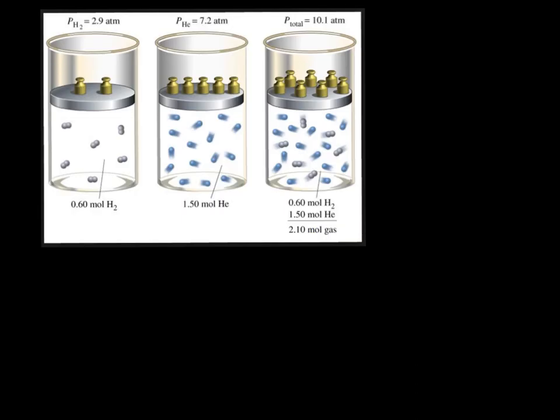Again, just another example here. If I have 0.6 moles of hydrogen and 1.5 moles of helium, it says the total moles is 2.1. If I took 10.1 times 0.6 moles of hydrogen divided by 2.1 moles total, I would get the partial pressure of hydrogen, which is 2.9 atmospheres.